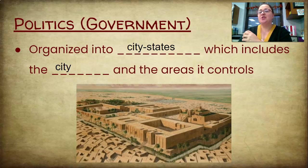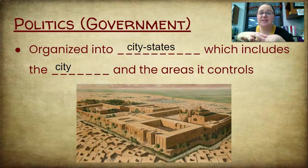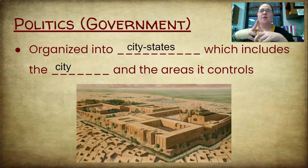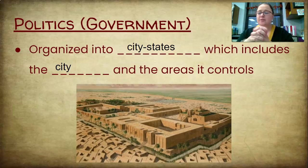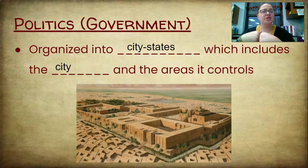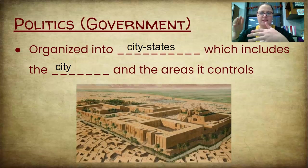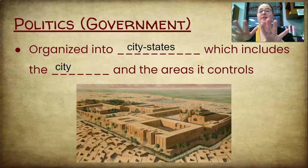Each city-state had its own leader, had its own money system, and had its own religious gods and goddesses that it worshipped. Sometimes the city-states would go to war with each other. They didn't work together like the states we have today — like Ohio and Indiana working together. It was not that way in Mesopotamia; they were very different.